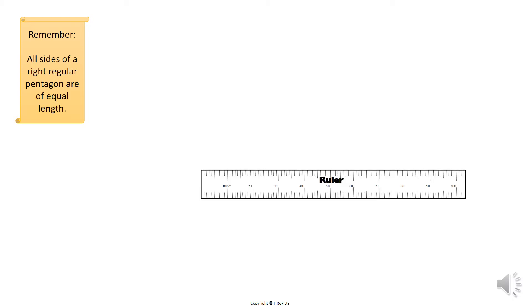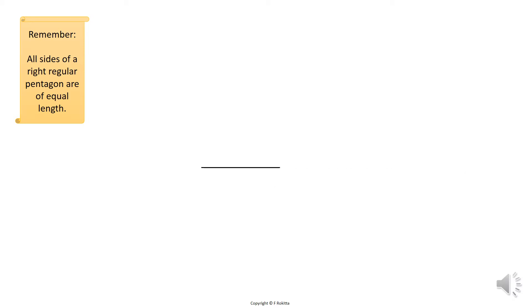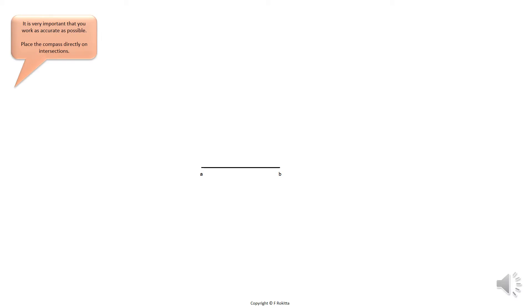We will start this pentagon by drawing the length of the baseline onto the space provided. Now you need to label the line AB. Once you have labeled the baseline AB, it is very important to remember that all constructions done in this method of a pentagon are using this base length.